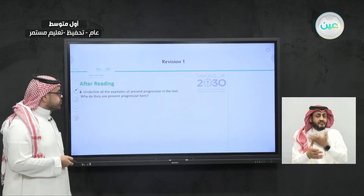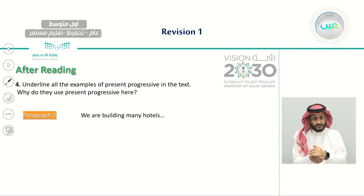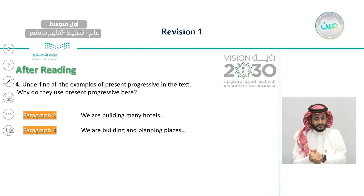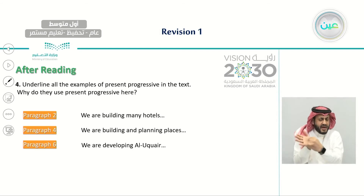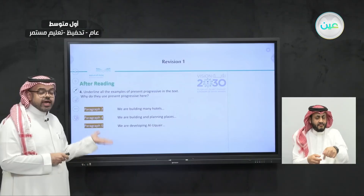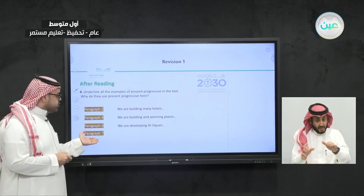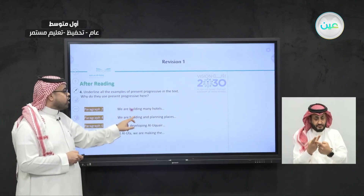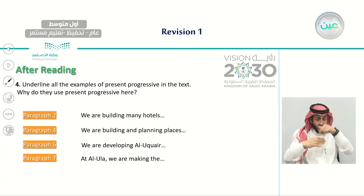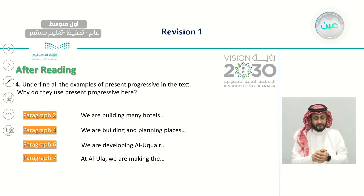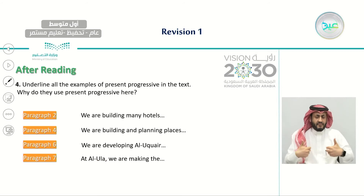We also did an exercise where we underlined examples of the present progressive in the reading text. For example, in paragraph two we have 'we are building', in paragraph six 'we are developing', and in paragraph seven 'we are making'. This was a useful exercise for detecting present progressive forms in context.